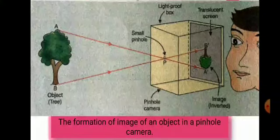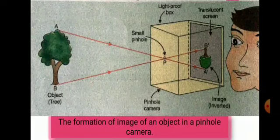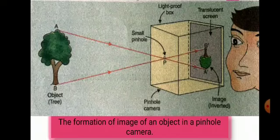The characteristics of the image formed in a pinhole camera are: it is inverted, that is upside down as compared to the object; the image is real, meaning it can be formed on the screen; the image is of the same color as the object; and the image can be smaller than, equal to, or bigger than the object, depending on the distance of the object from the pinhole camera.